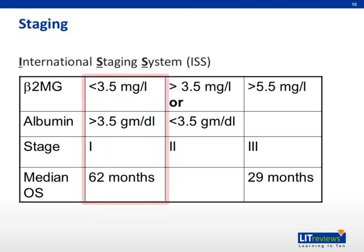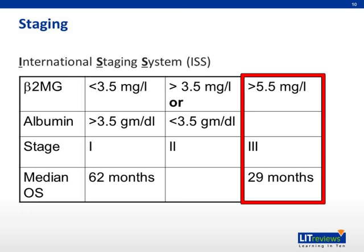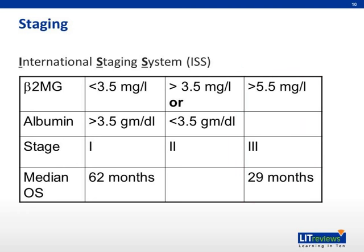Patients who have a beta-2 microglobulin less than 3.5 mg/L and albumin more than 3.5 g/dL have the most favorable outcome, with a reported median survival of 62 months. Whereas patients with a beta-2 microglobulin more than 5.5 mg/L, with very high tumor load, fall into stage three in ISS with a reported median survival of 29 months. A potential pitfall of ISS staging is false elevation of beta-2 microglobulin in renal failure patients.